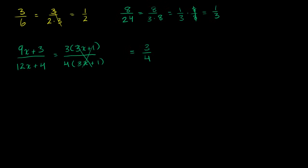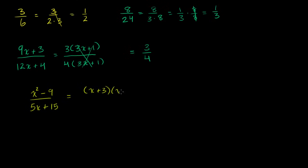Let's say we had (x² − 9) over (5x + 15). What is this going to be equal to? The numerator we can factor — it's a difference of squares — so we have (x + 3)(x − 3). And in the denominator, we can factor out a 5, giving us 5 times (x + 3). So once again, there's a common factor of (x + 3) in the numerator and denominator — we can cancel them out.